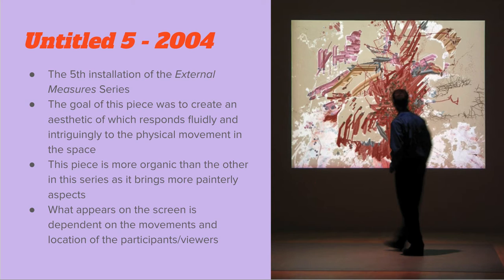In Untitled 5 from 2004 — the fifth installment of her External Measures series — the goal was to create an aesthetic that responds fluidly and intriguingly to physical movement in the space. This piece is much more organic than the other pieces in this series and brings more painterly aspects. What appears on the screen is dependent on the movement and location of the participants, just like in the External Measures work. Here she switches to a more organic composition, as it mimics the body — the living, breathing tool that brings this living piece to life.